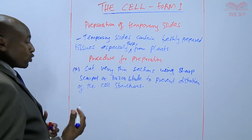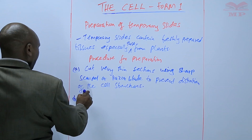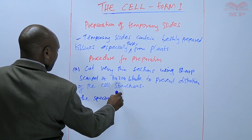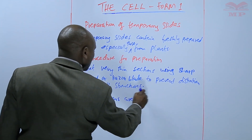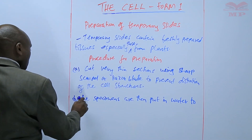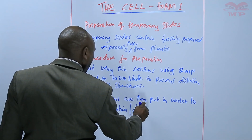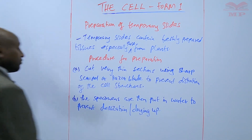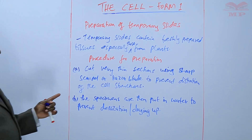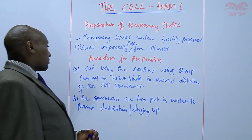So we don't want to distort or interfere with the cell parts. Another consideration is that the specimens are then put in water to prevent desiccation — to prevent drying up due to loss of moisture. So the moment you cut very thin sections using a sharp razor blade, you put them in water to prevent them from drying up.